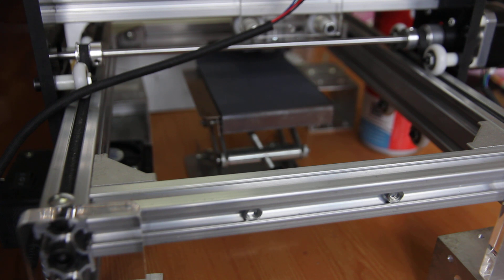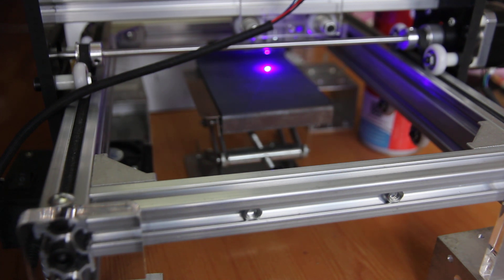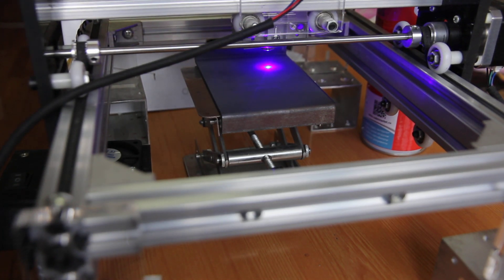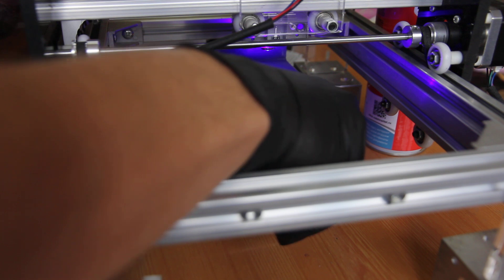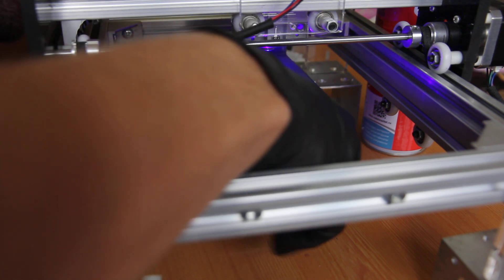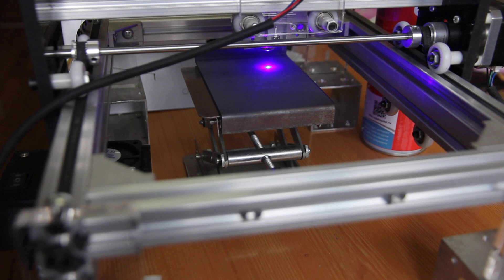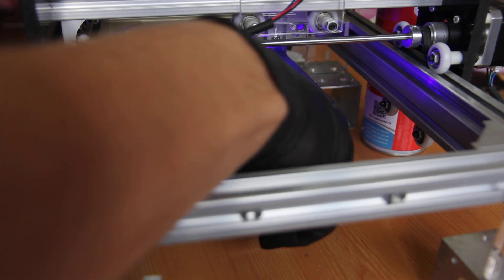We use an Eleksmaker DIY engraving machine and BenBox software. The initial speed we're going to use is 100 and 150. Let's make sure that we are in perfect focus. Okay, I need to take care of you guys while making this.